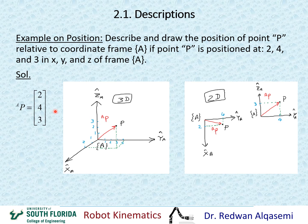To mathematically write this, P relative to frame A equals two units in X, four units in Y, and three units in Z — as given in this problem.